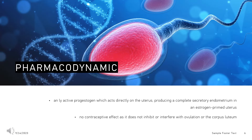Pharmacodynamics: Dydrogesterone is an orally active progestogen which acts directly on the uterus, producing a complete secretory endometrium in an estrogen-primed uterus. At therapeutic levels, Dydrogesterone has no contraceptive effect as it does not inhibit or interfere with ovulation or the corpus luteum. Furthermore, Dydrogesterone is non-androgenic, non-estrogenic, non-corticoid, non-anabolic, and is not excreted as pregnanediol.